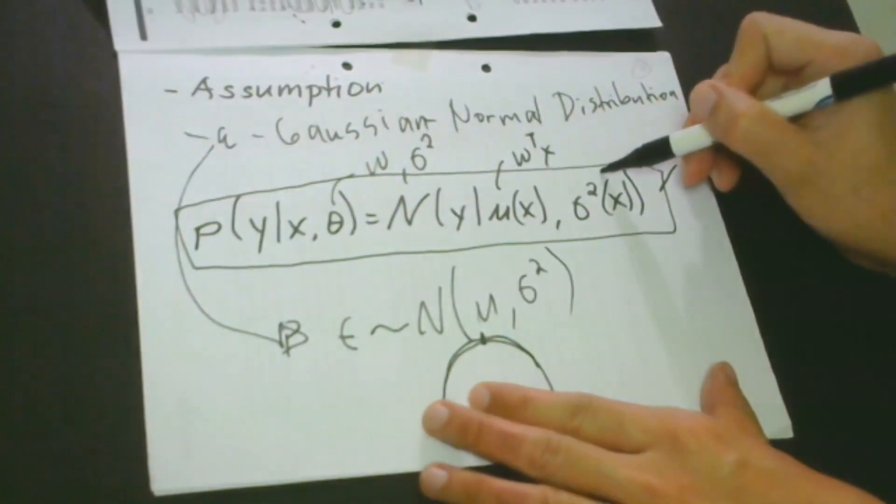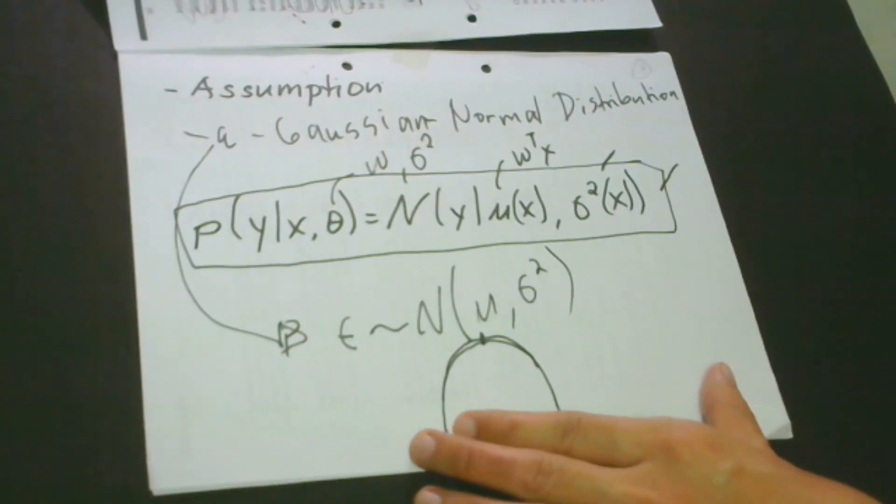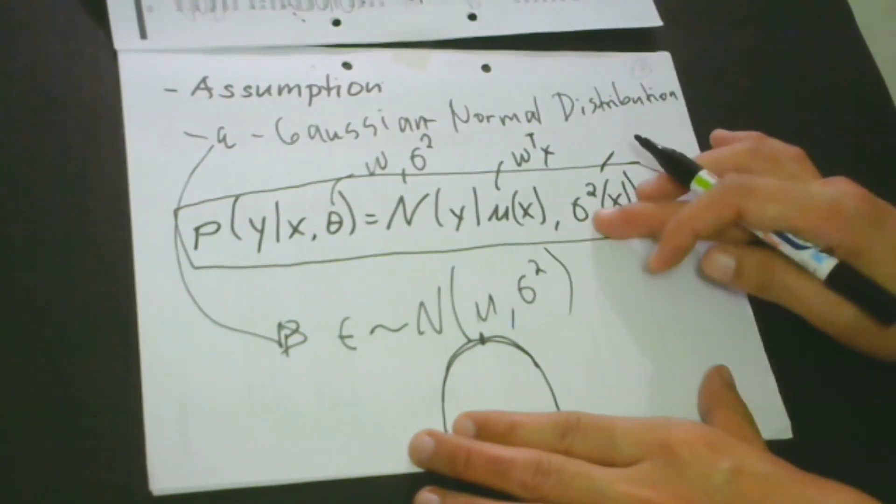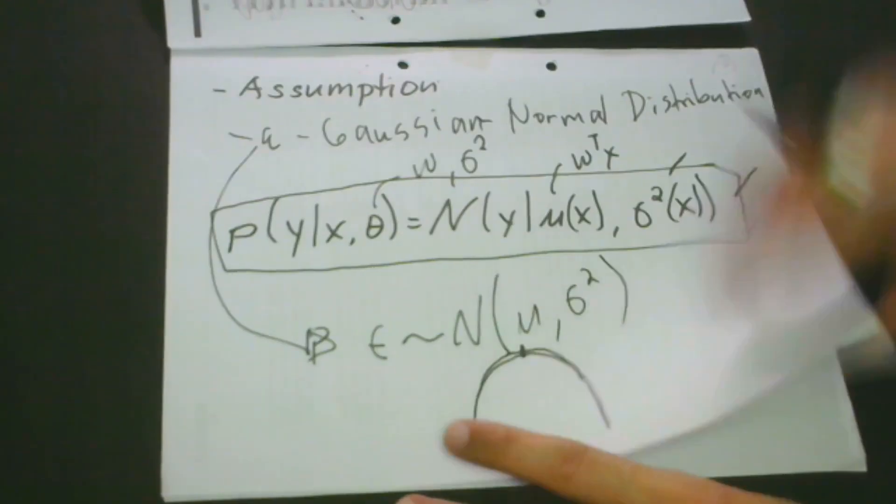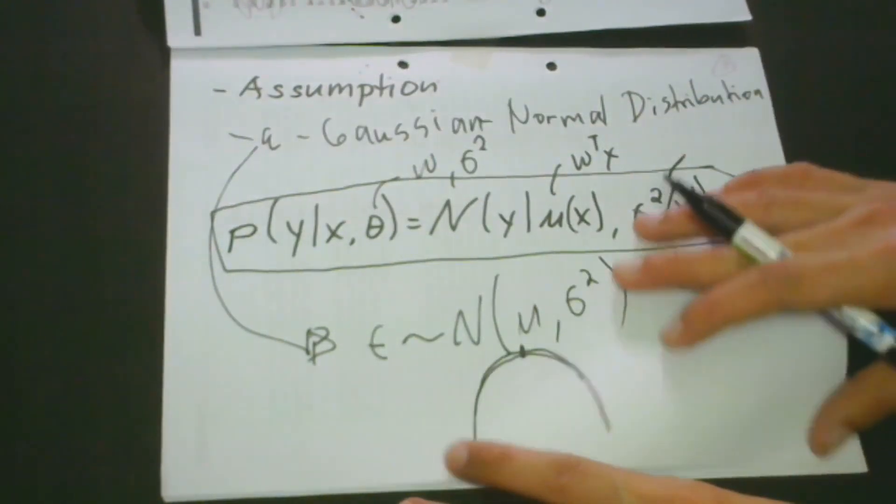And so this one is actually the w transpose x that we had in or we have in our real model and or original model. And then this one is actually the fixed version of our error.